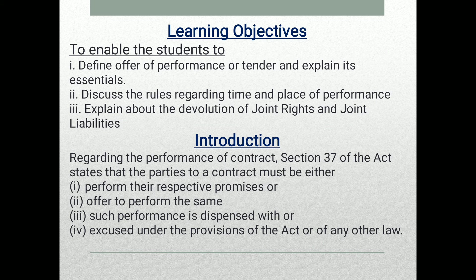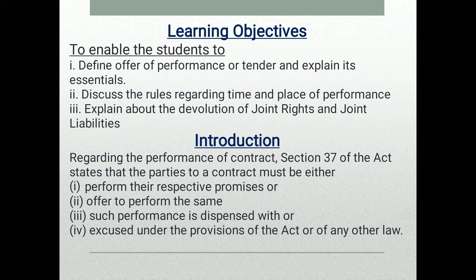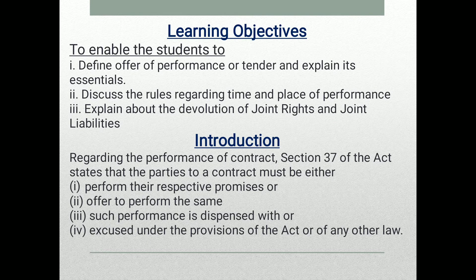The learning objectives of this chapter include definitions and what things we are going to be studying. We will cover the definition, offer of performance or tendency, expenses, rules and regulations, time and place of performance, expense, and the devolution of joint rights and joint liabilities.